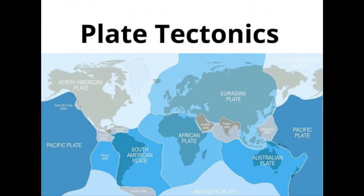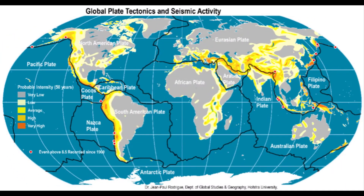The world is covered in tectonic plates. All the tectonic plates move around constantly, at about the same speed that your fingernails grow. When these plates move against each other, they cause things as destructive as earthquakes and as beautiful as mountain ranges.